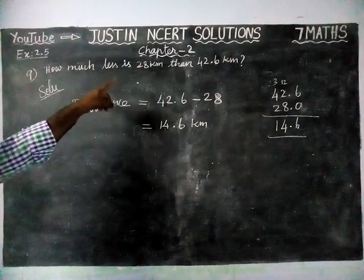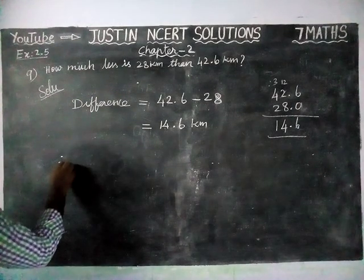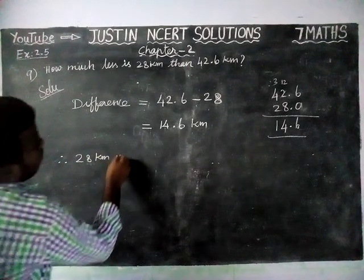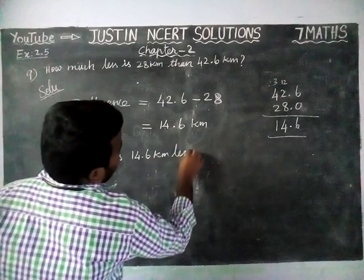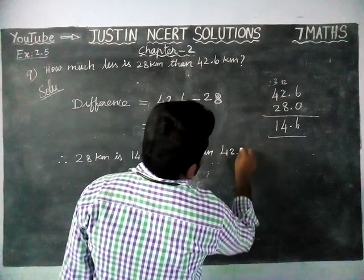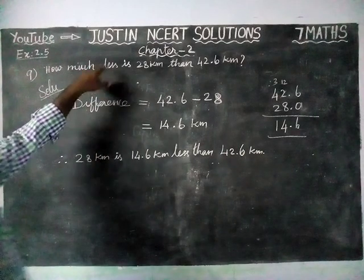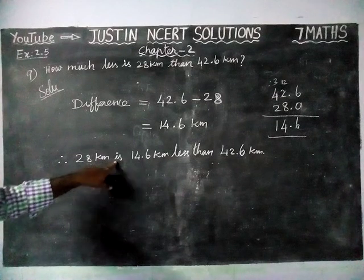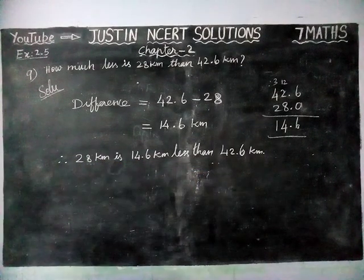They asked us how much less is 28 km than 42.6 km. Therefore, 28 km is 14.6 km less than 42.6 km. Okay, that's all students.